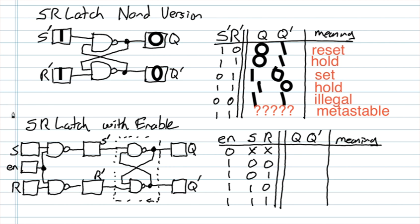Let's look at what happens when enable equals zero. A zero into a NAND gate forces a one — it doesn't matter what the other input value is. So S and R become irrelevant, which is why those X's are there. With both NAND outputs forced to one, we get two ones going in.